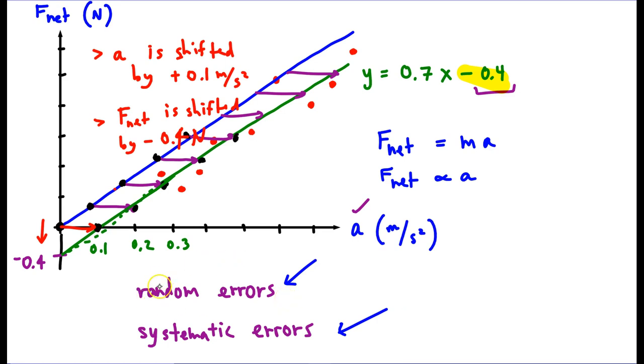And then also, try to estimate how big was that fluctuation. Well, the data got as far away as, I don't know, 0.1 newtons, or whatever you want to say. So that's going to be the analysis that we're looking for in these lab reports.